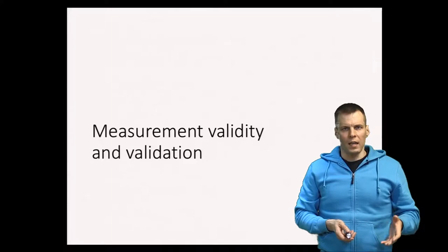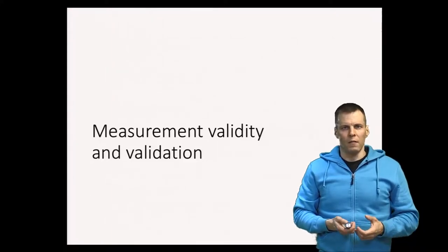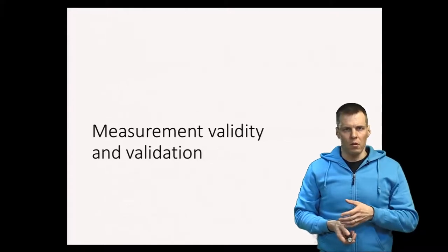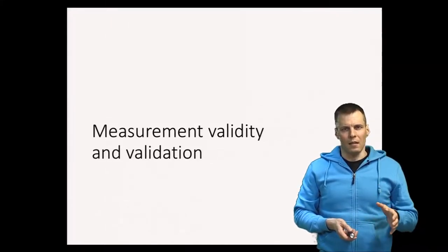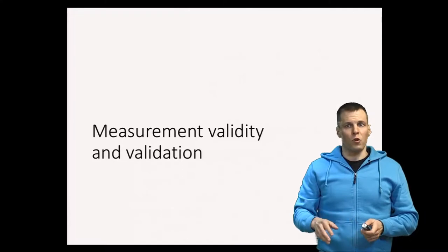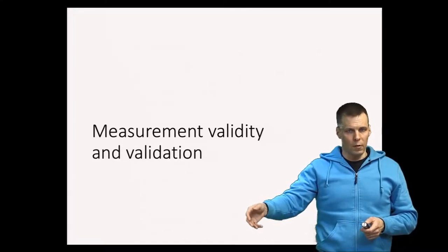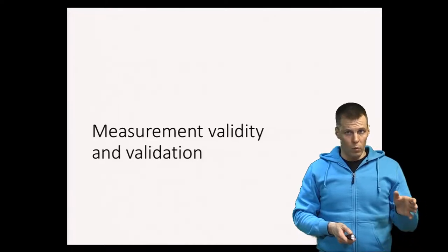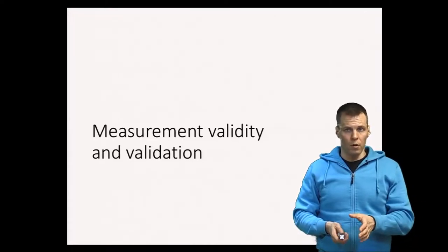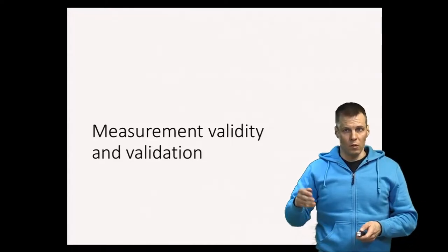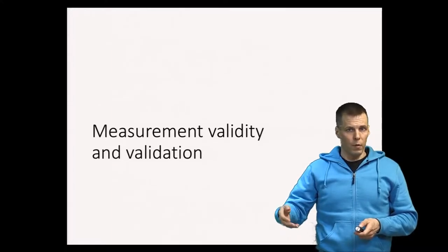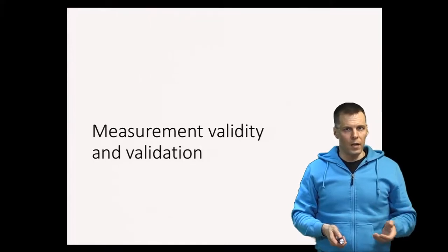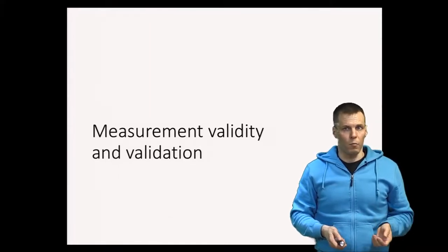The issue of validity is much more complicated. Validity refers to whether your indicators measure what they're supposed to measure. The problem is that because we cannot observe the thing being measured directly, we cannot really statistically assess whether the indicators correspond to the attribute, trait, or construct that we want to measure. Validity and validation are complicated topics, and in this video I will introduce you to some of that complexity.